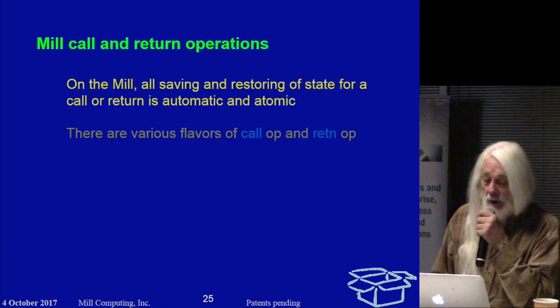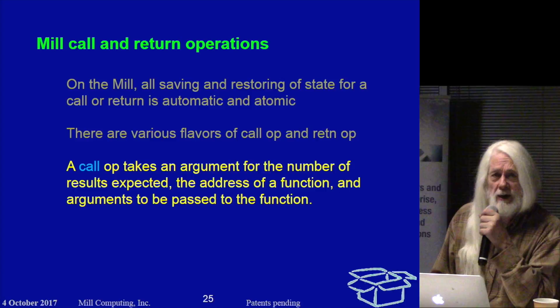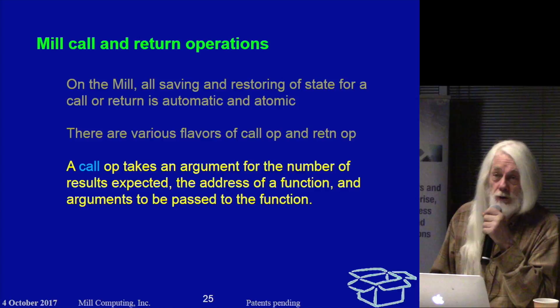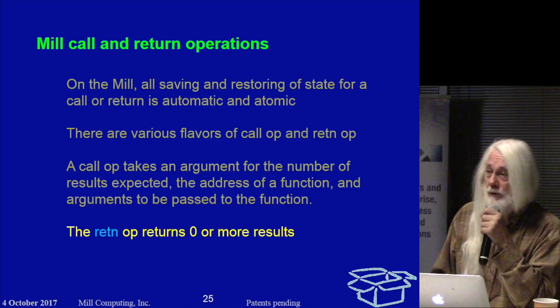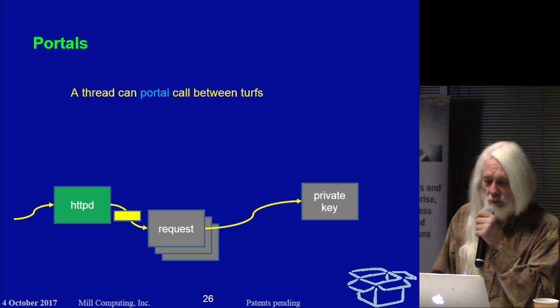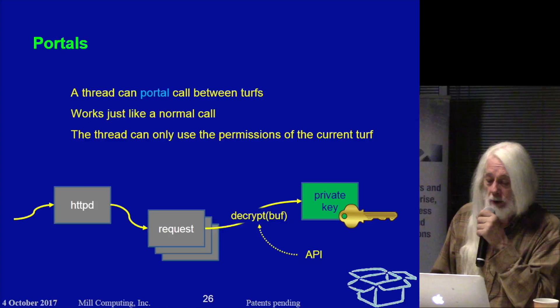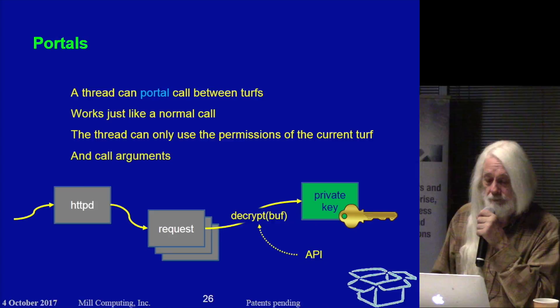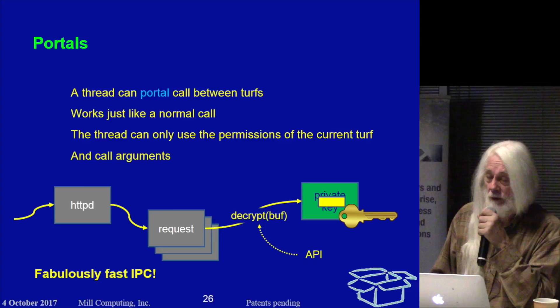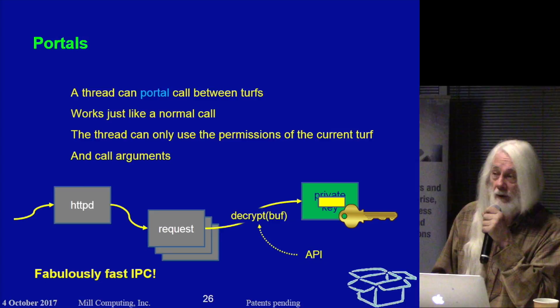In actual use, in assembly language code or coming out of the compiler, they look fairly normal. It takes an argument saying how many results you expect and what the address is, just like anything else, and the list of arguments to be passed. The return basically unwinds everything and gives you back zero or more results as a response. Portals work essentially the same way, except that when it arrives at the callee, it's now running in a different TURF than it was for the caller. This means that IPC is very fast. In particular, a portal call is of the same order of overhead as a normal function call. Switching the TURF basically involves setting one register as we go through, and the OS is not involved.